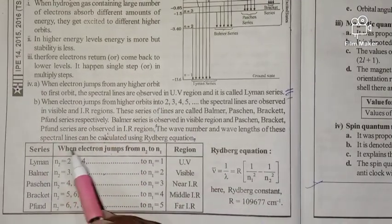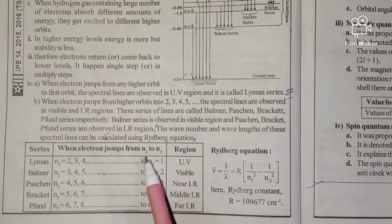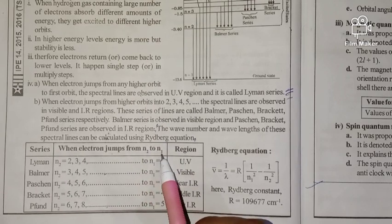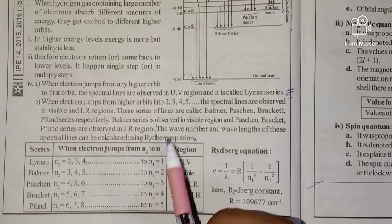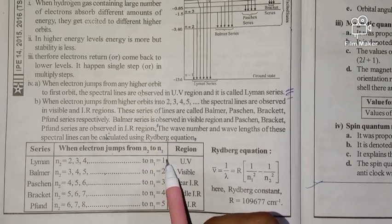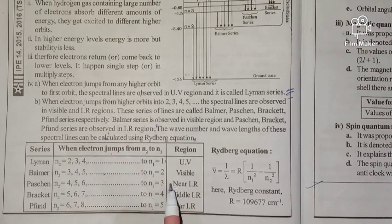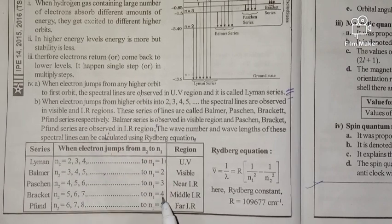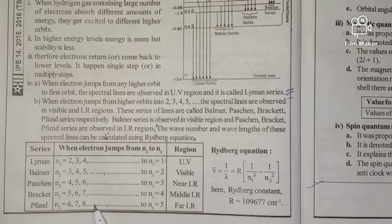Each series is defined when an electron jumps from N2 to N1, where N2 is the higher orbit. For example: Lyman series N1=1, N2=2,3,4...; Balmer series N1=2, N2=3,4,5...; Paschen series N1=3, N2=4,5,6...; Brackett series N1=4, N2=5,6,7...; Pfund series N1=5, N2=6,7,8.